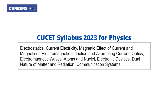CUET syllabus 2023 for physics includes: electrostatics, current electricity, magnetic effect of current and magnetism, electromagnetic induction and alternating current, optics, electromagnetic waves, atoms and nuclei, electronic devices, dual nature of matter and radiation, and communication systems.